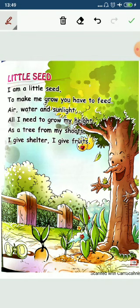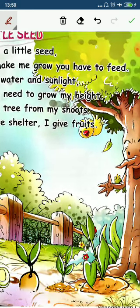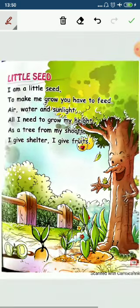First, we will plant the seed in soil, down into the ground. Then we will put a little water on it and leave it in the soil. Look, the plant grows into a small tree, and then this small tree will grow slowly.